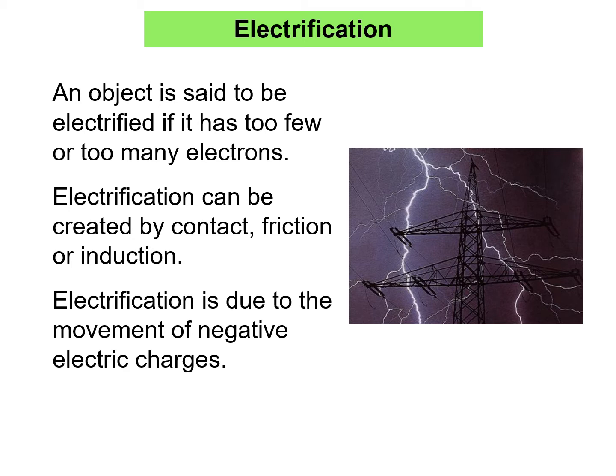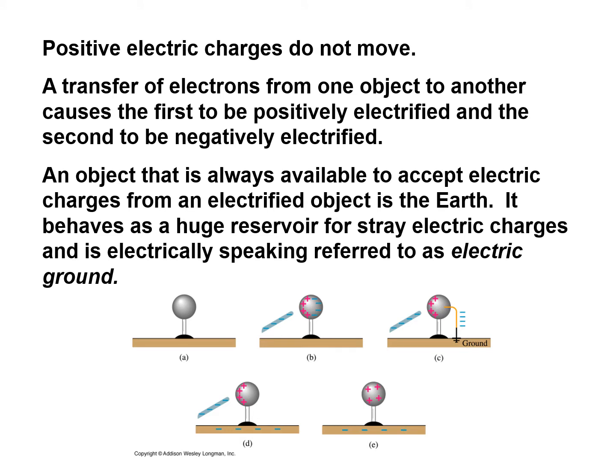Electrification is due to the movement of negative electric charges — the electrons, not the protons. Positive electric charges do not move. A transfer of electrons from one object to another causes the first to be positively electrified and the second to be negatively electrified. When an object gives up electrons it has more positive charges, making it positively charged, while the object receiving electrons has more negative charges and is negatively electrified.